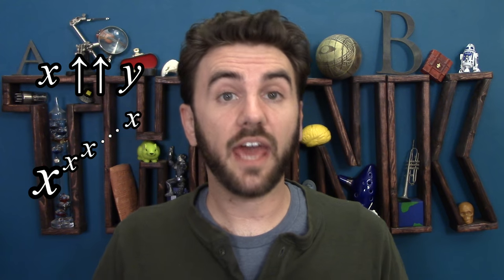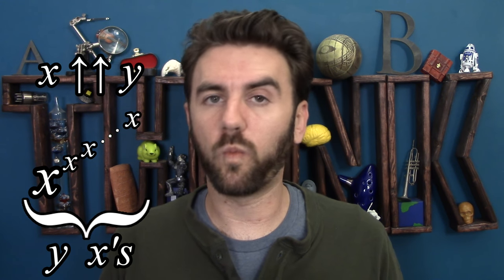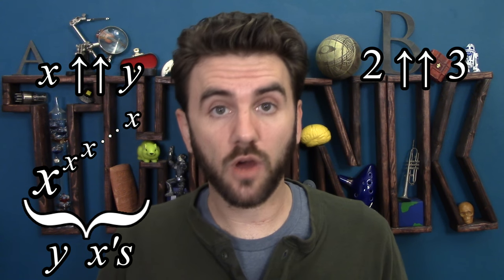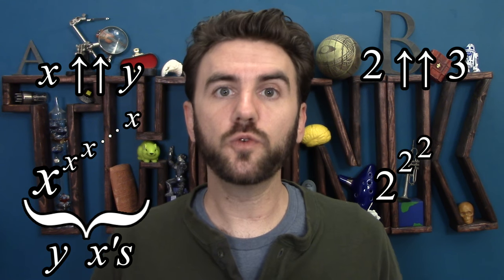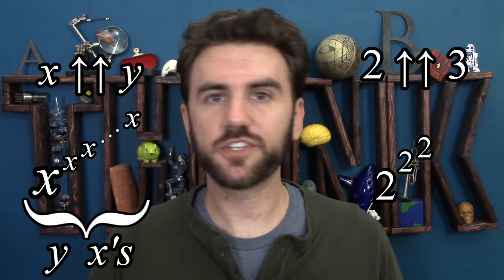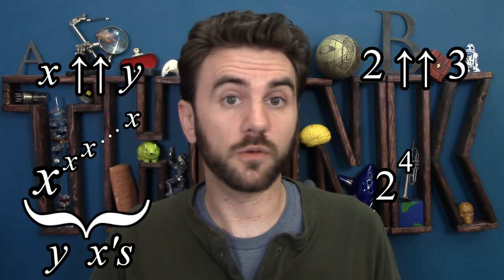Mathematicians have invented notational tools to represent stupidly large numbers in a way that won't take all day to write out. This up-arrow notation is used in Graham's proof, and it denotes a sort of recursive tower of exponents. x double-arrow y means raise x to the xth power y times. So 2 double-arrow 3 means a stack of three 2's — 2 squared squared — which is just 2 to the 4th power, or 16.